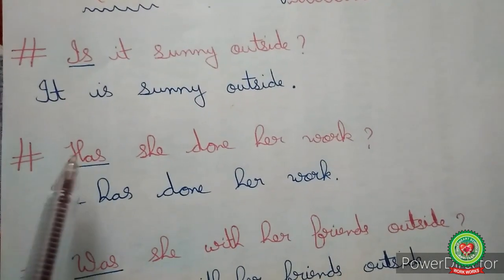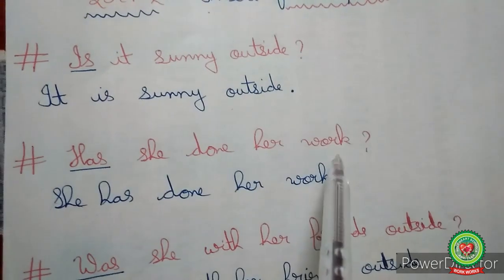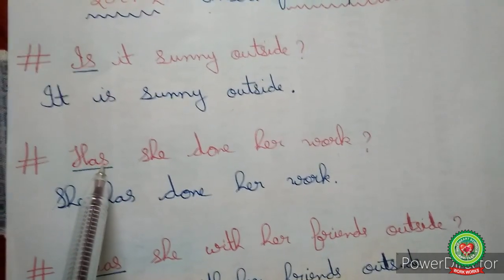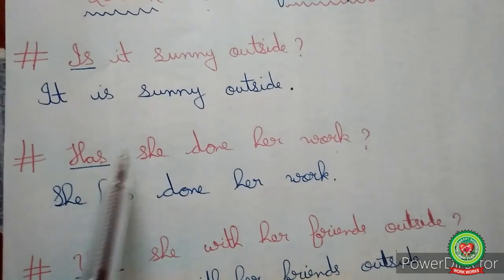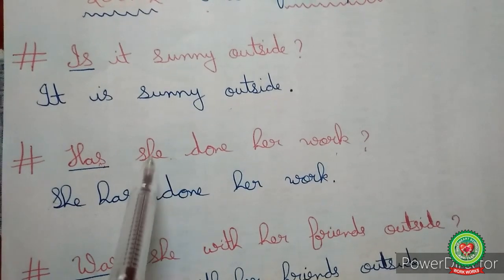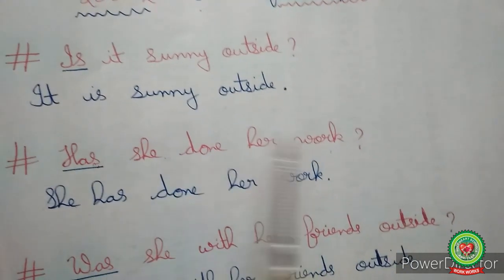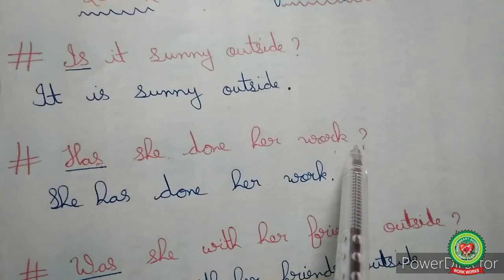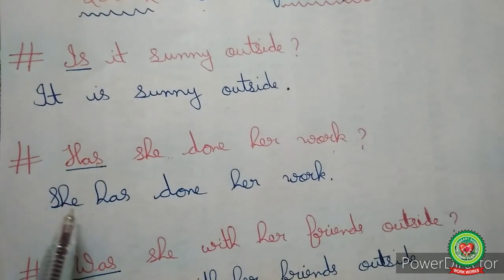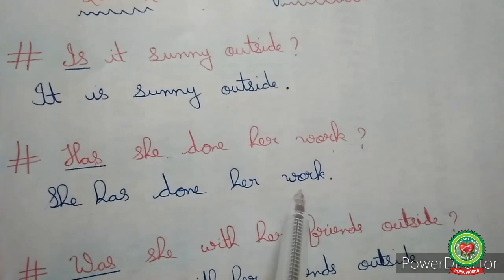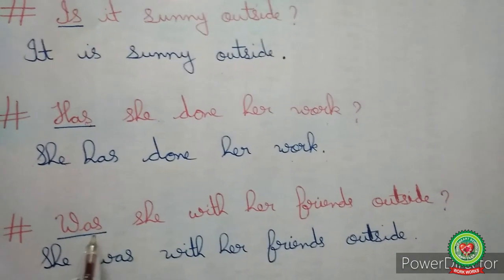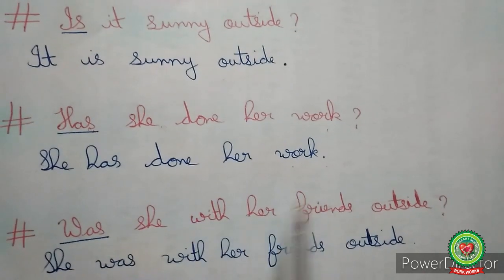The second example: 'Has she done her work?' Here 'has' is the helping verb placed at the beginning. 'Has' will be placed after the subject 'she,' and the question mark will be replaced with a full stop. The sentence becomes: 'She has done her work.'